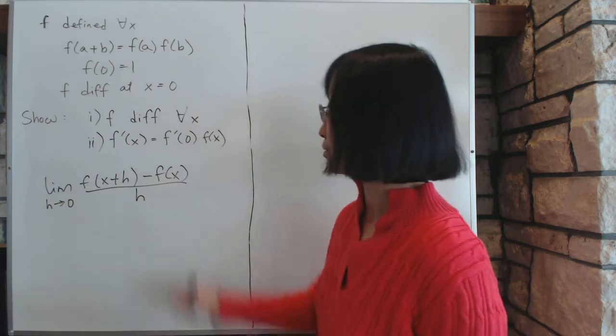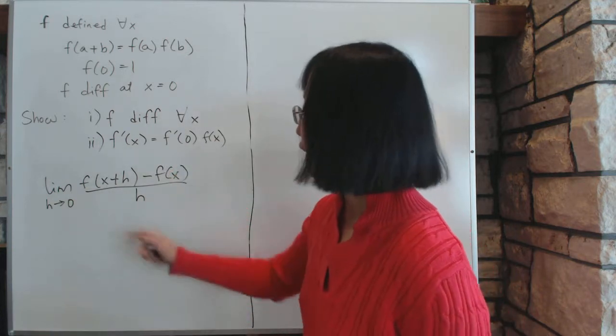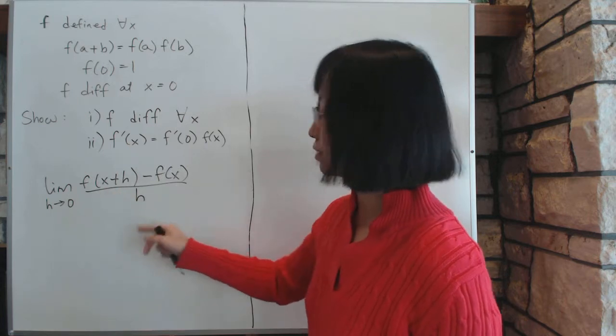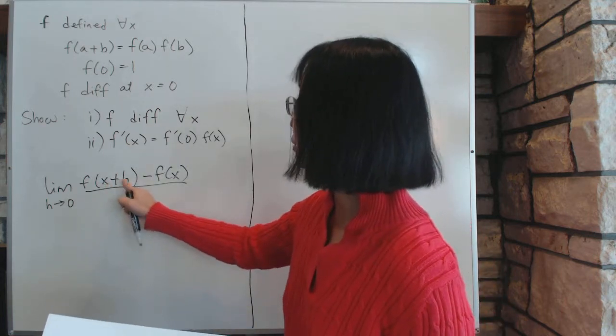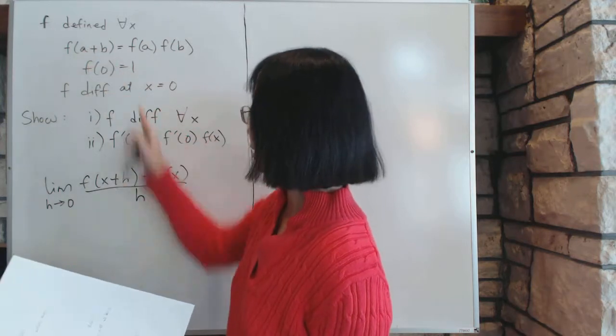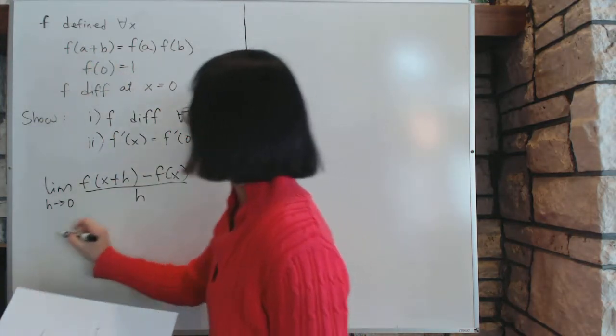We don't know if it exists yet, besides 0. And why do we choose this formula not the other kind? Because it has x+h in here, and we have a+b here, and we want to use this thing somehow. So using it...